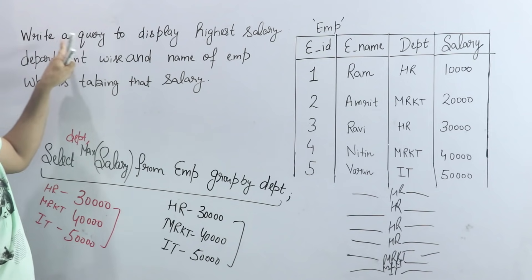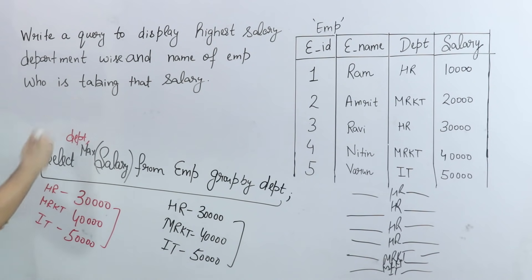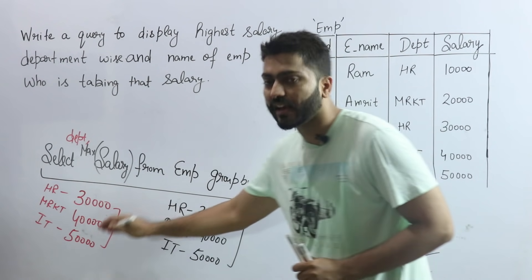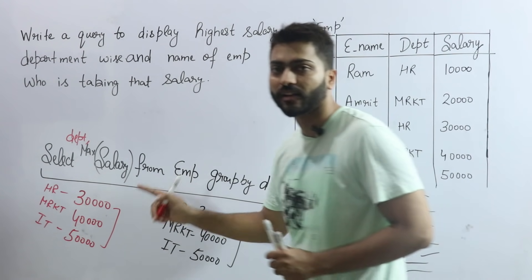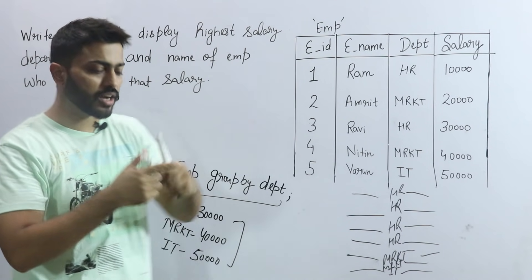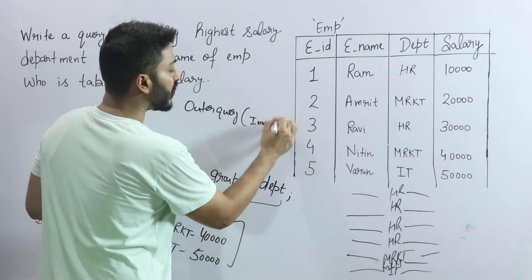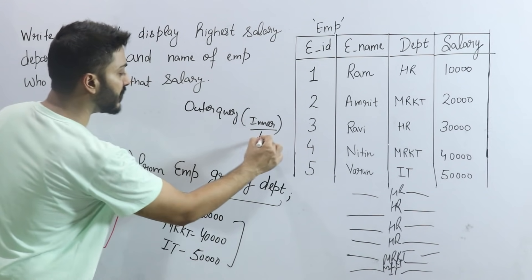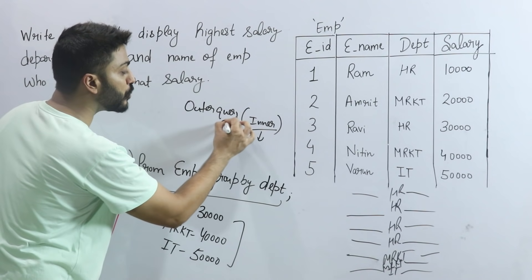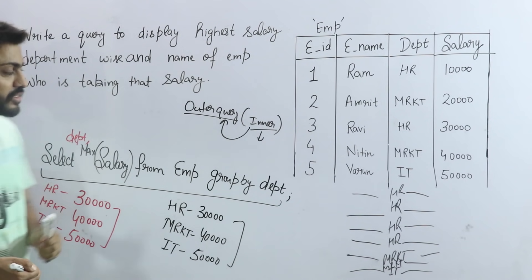यह question का आधा हिस्सा complete हो गया — department wise highest salary निकाल ली। अब employee का name find करना है जो यह salary ले रहा है। इसके लिए हम subquery use करेंगे — इस query को inner query में रखेंगे और एक outer query में from करेंगे। Outer query में display करवाना है name of the employee.